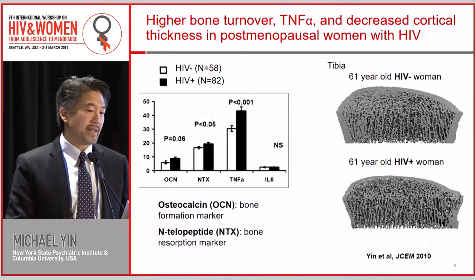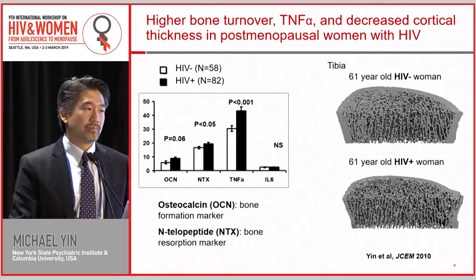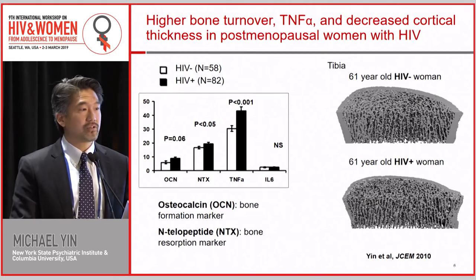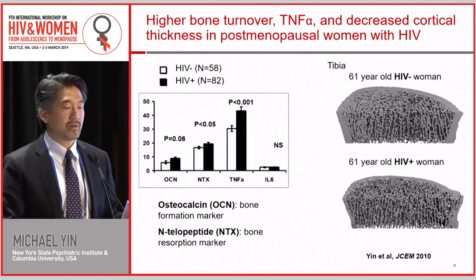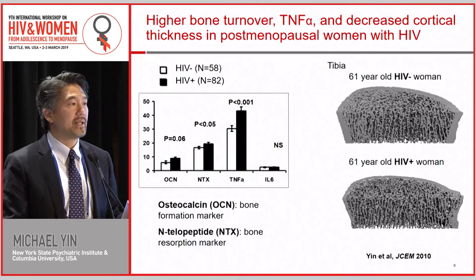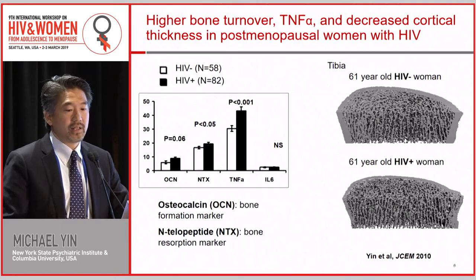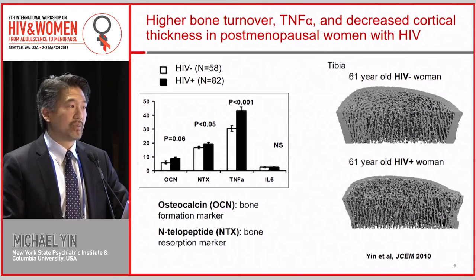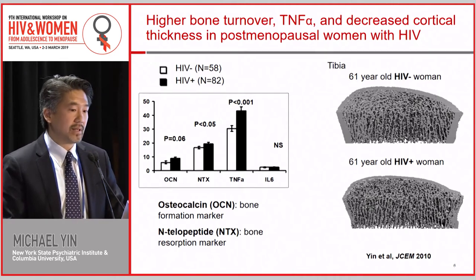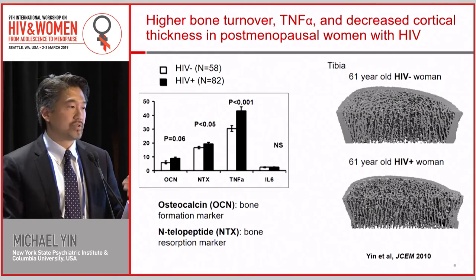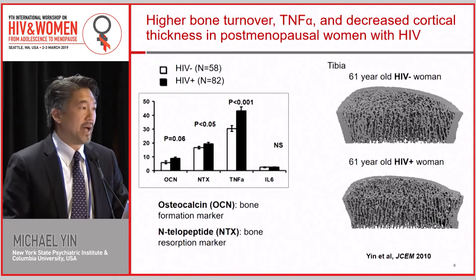We probed into bone formation and resorption rates by measuring osteocalcin as a bone formation marker and telopeptide as a resorption marker in the sera. We found that both bone formation and resorption markers were higher in the women living with HIV, suggesting greater bone remodeling overall, and that TNF-alpha was higher as well. In a multivariate model, when we put TNF into the model, it attenuated the effect of HIV on bone, suggesting that part of this was mediated by inflammation.